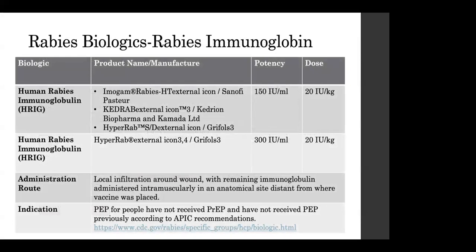Human rabies immunoglobulin, also referred to as H-Rig, is the rabies biologic used for PEP for people who have not received pre-exposure prophylaxis and have not received PEP previously, according to the ACIP recommendations. The administration route recommendations are to administer local infiltration around the wound at 20 units per kilogram, with the remaining H-Rig administered intramuscularly in an anatomical site distant from where the vaccine was placed.